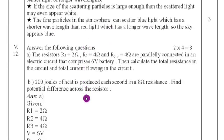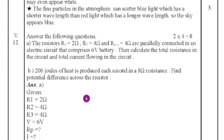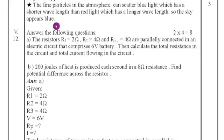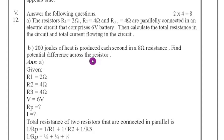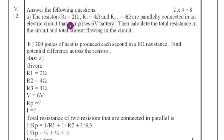Fifth main answer the following questions here two questions carry eight marks. Twelfth question, the resistors R1 is equal to 2 ohm R2 is equal to 4 ohm and R3 is equal to 4 ohm are respectively parallelly connected in an electric circuit that comprises six volt battery. Then calculate the total resistance in the circuit and total current flowing in the circuit. Here first we can see the first question. They are given R1, R2, R3 in the parallel series. So, they are connected parallelly.